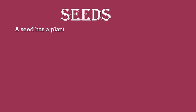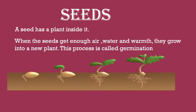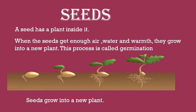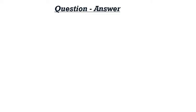Seed — beej. A seed has a plant inside it. (Beej ke andar ek paudha hota hai.) When a seed gets enough air, water, and warmth, it grows into a new plant. This process is called germination. (Jab beejoon ko paryapt hawa, paani aur garmi milti hai, to wo ek naye paudhe ke roop mein viksit hote hain. Is prakriya ko ankuran kehte hain.) Seeds grow into a new plant.